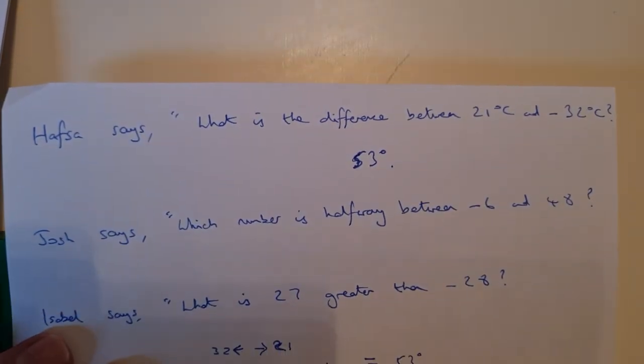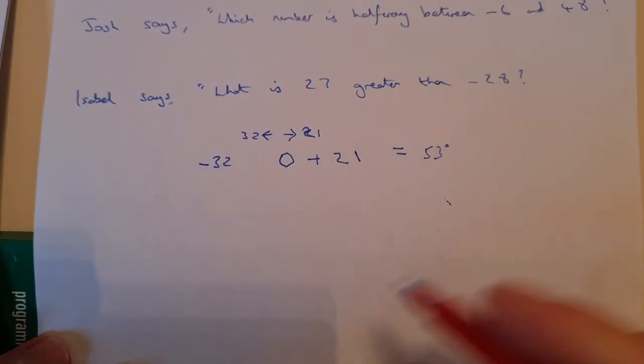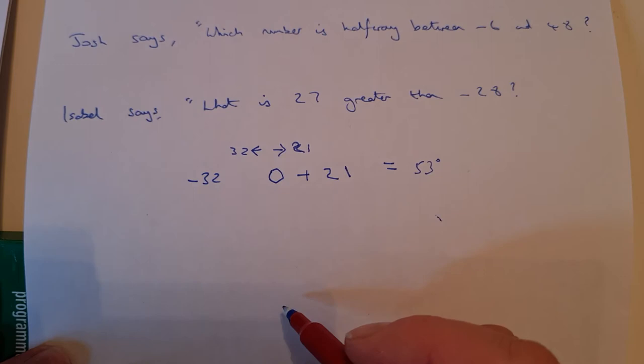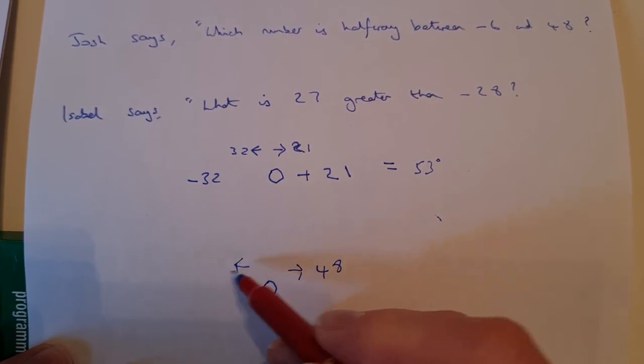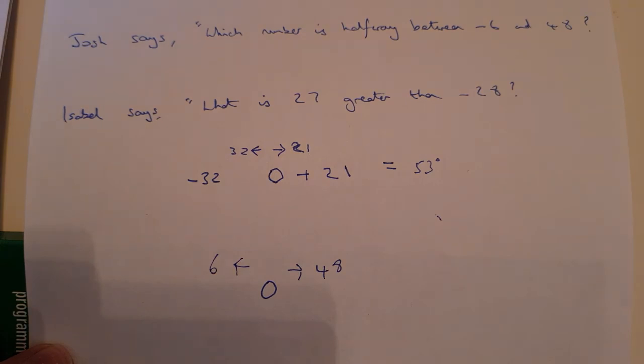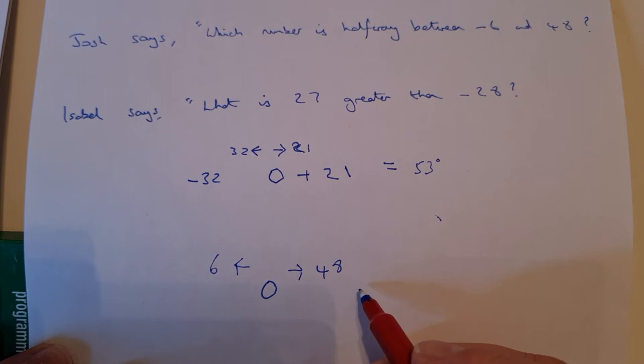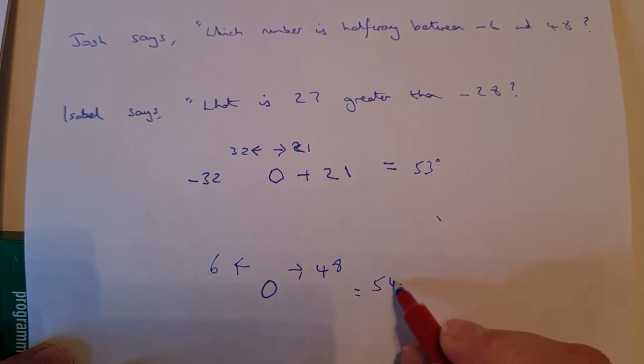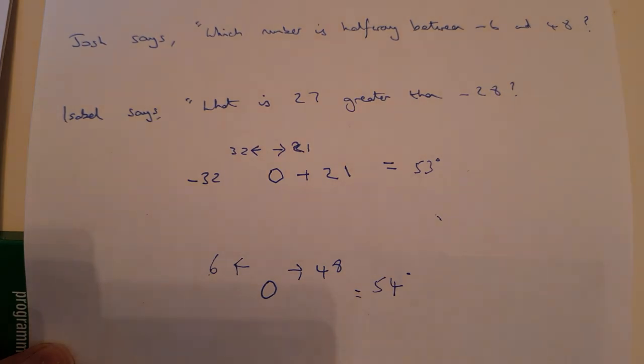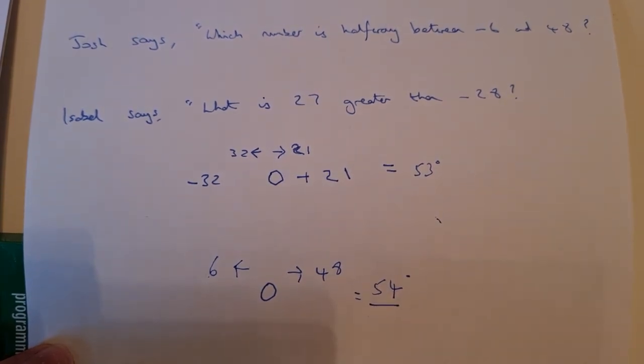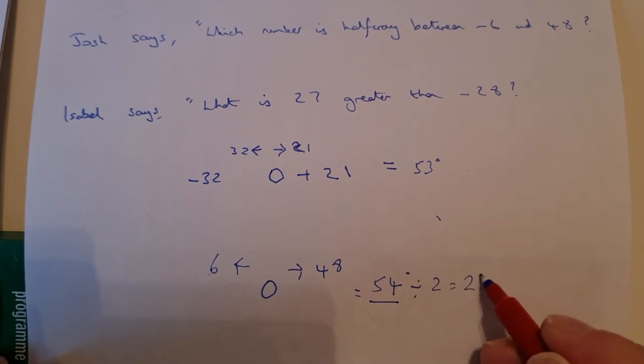Let's look at the next one. Josh says, which number is halfway between minus 6 and 48? Just move my paper down to do my working out. Well, again, if I'm finding the difference between minus 6 and 48, I've got 48 on one side and 6 on the other side. 48 above 0, 6 below 0. That means a distance of 54 degrees. But Josh is asking me for the number which is halfway between. So what is halfway of 54? Well, I'm going to halve it, divide it by 2, and that gives me 27.